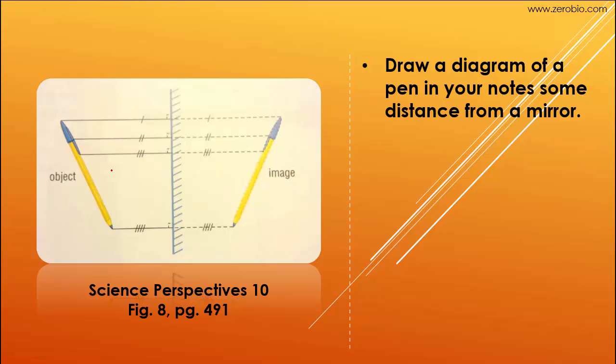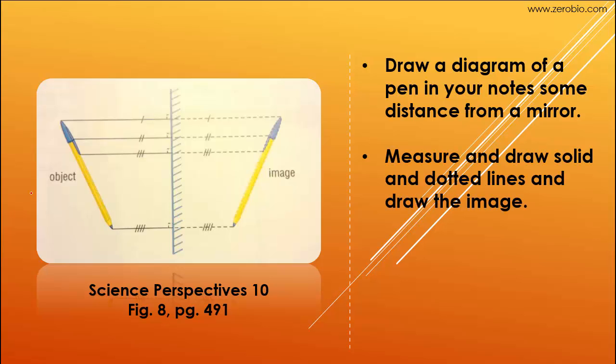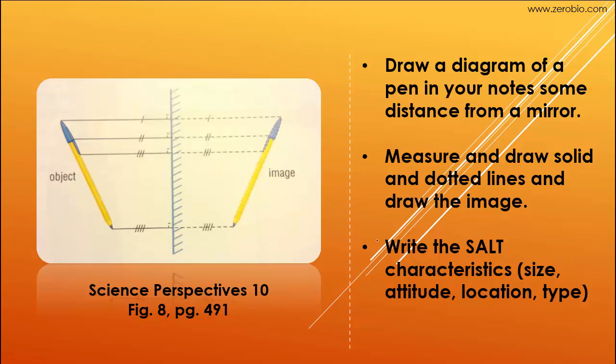What I would like you to do is to take a few moments, and you're going to draw a diagram of a pen. I realize your pen may look a little bit different in your notes than this one, that's okay. Whatever you draw as an object, you're going to draw as an image. So you go ahead and you draw a pen on any angle, don't have it straight out, that's a little bit too easy. Draw it on a bit of an angle with respect to a plain mirror, so use your ruler to draw this. And then go ahead and measure and draw the solid and the dotted lines so that you can draw the image. And don't forget to label the object and label the image. Once you've done that, you can go ahead and give the salt characteristics for the image, the size, the attitude, the location, and the type. So I'd ask you to pause the video here, go ahead and do this, take about five minutes or whatever, and make your drawing, and then come back to the video.